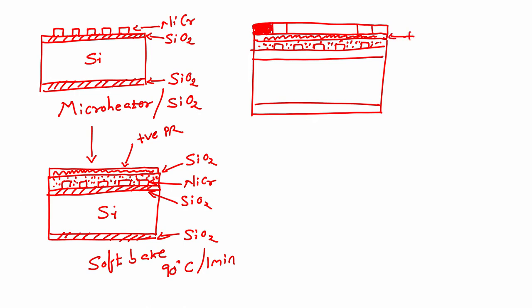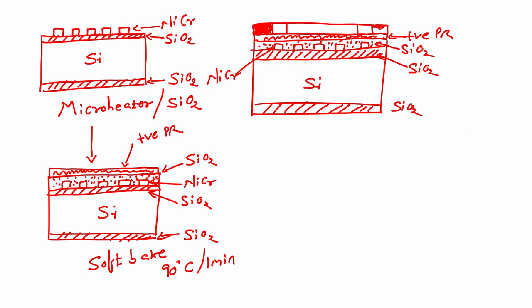Using a dark field mask with a positive photo resist, we expose the wafer with UV light. Since it is a positive photo resist, the unexposed region will be stronger and the exposed region will be weaker. The exposed regions are the contact areas.